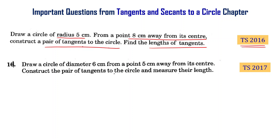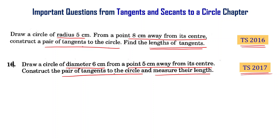Draw a circle of diameter 6 cm. From a point 0.5 cm away from its center, construct the pair of tangents to the circle, measure their length, and find the length of the tangents.